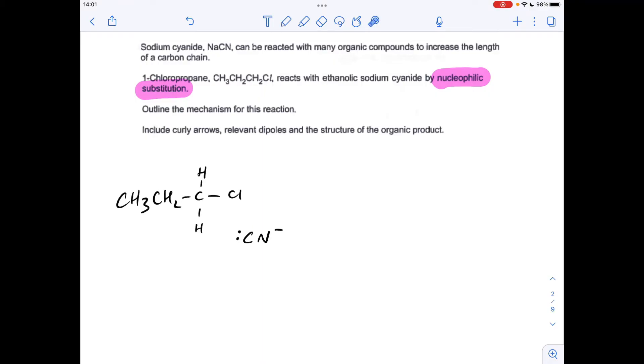Sometimes you see the minus sign above the carbon, but that's absolutely fine what I've drawn there. The other thing we need to do is put the dipole on the C-Cl bond. Chlorine's more electronegative than carbon, so the carbon's slightly positive and the chlorine's slightly negative.